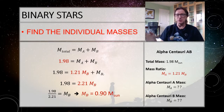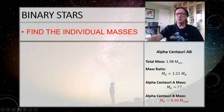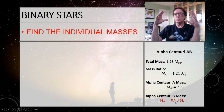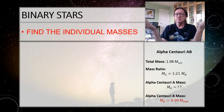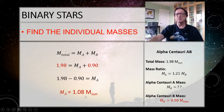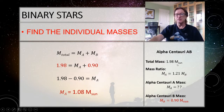Now finding the mass of Alpha Centauri A is easy. The total is 1.98 solar masses, and Alpha Centauri B is 0.9 solar masses, so everything left must be A. Subtract: 1.98 − 0.9 = 1.08 solar masses for Alpha Centauri A. So Alpha Centauri A is 1.08 solar masses and Alpha Centauri B is 0.9 solar masses.